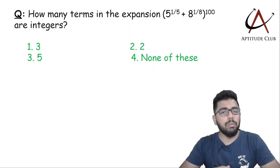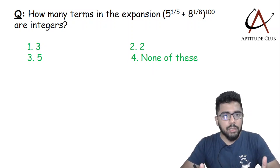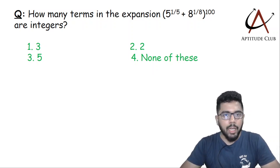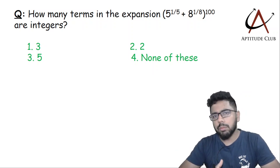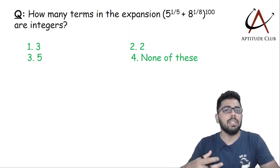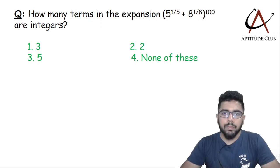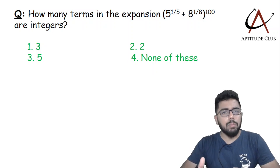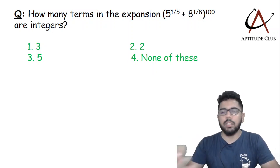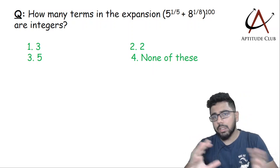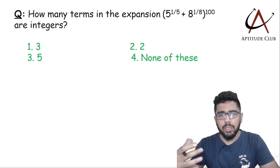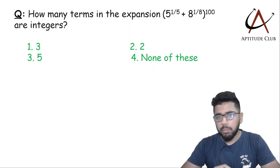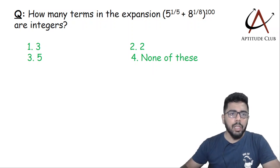In this session we are going to take up a beautiful question on binomial expansion. The question asks how many terms in this particular expansion are integers. To solve this we need to understand what binomial expansion is and how it can be applied. I'll ask all of you to pause and try it yourself first. I'll explain it in two ways — a normal process and a shortcut to answer in less than five seconds.